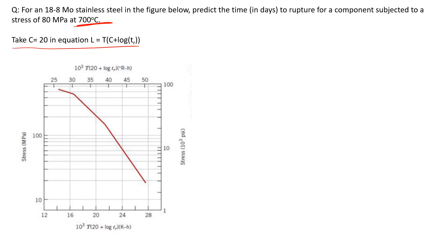Take C equal to 20 in the equation. The formula for the Larson-Miller parameter is L equals T times C plus log t_R, where T is temperature in Kelvin. Since the temperature here is in degrees centigrade, we will convert it into Kelvin.